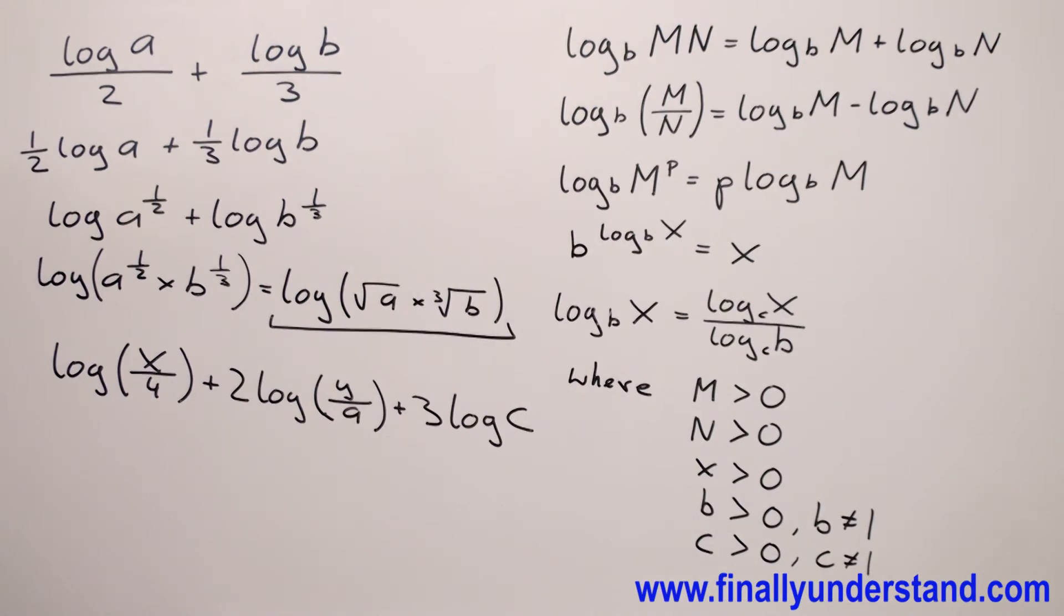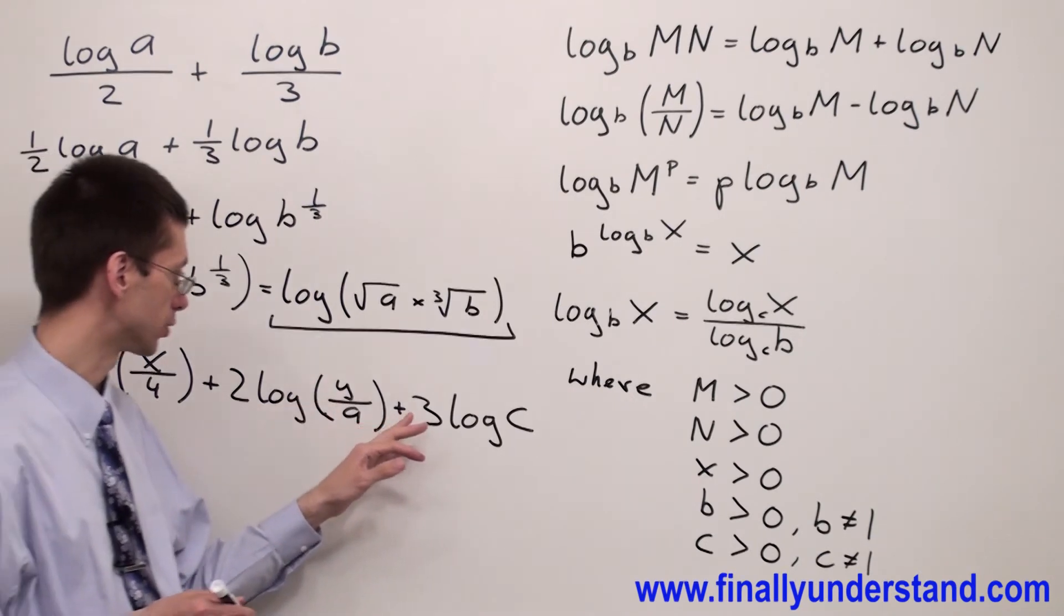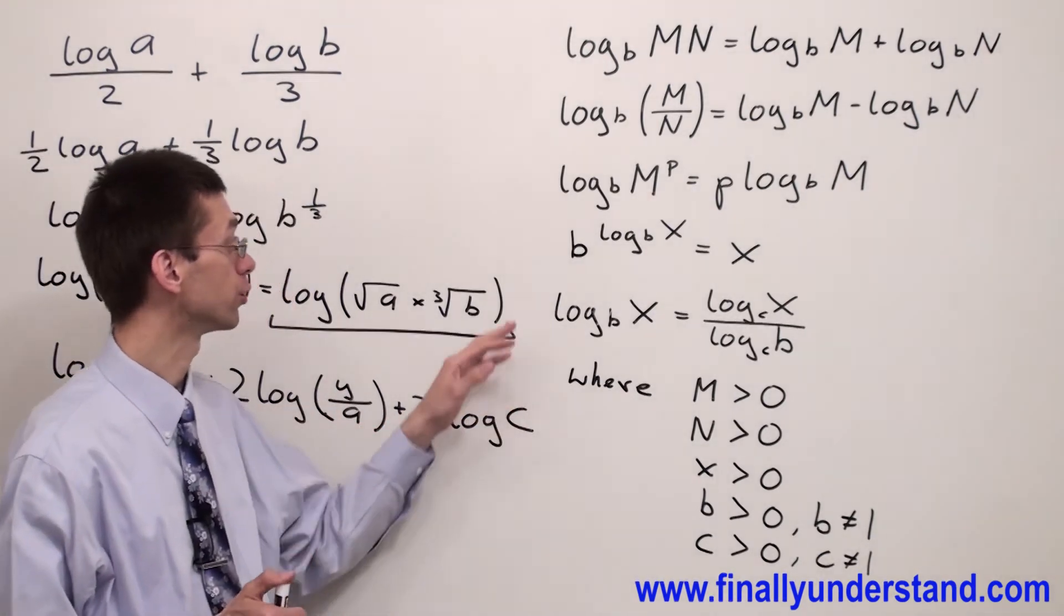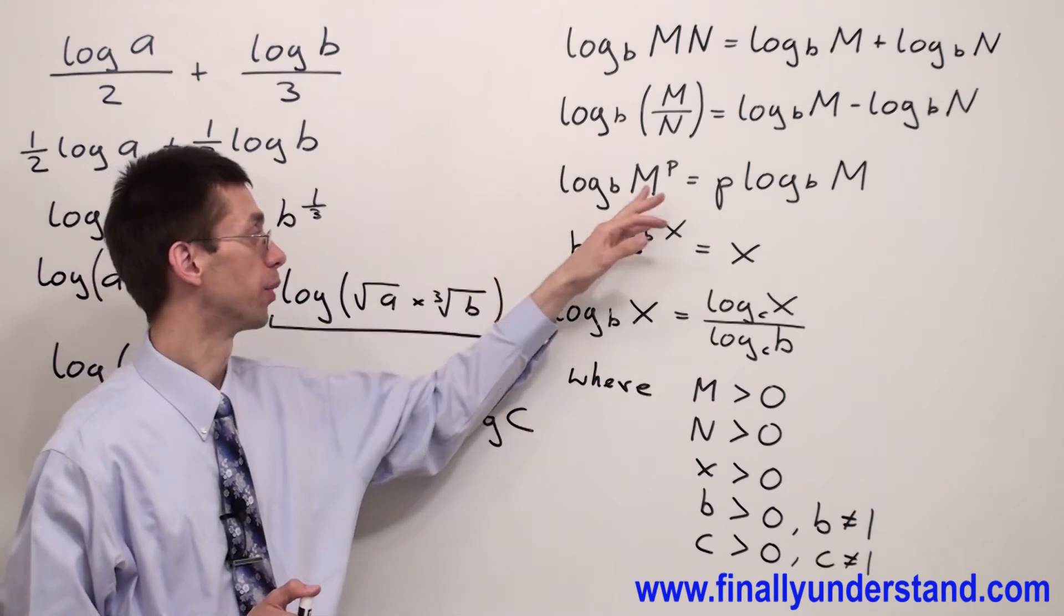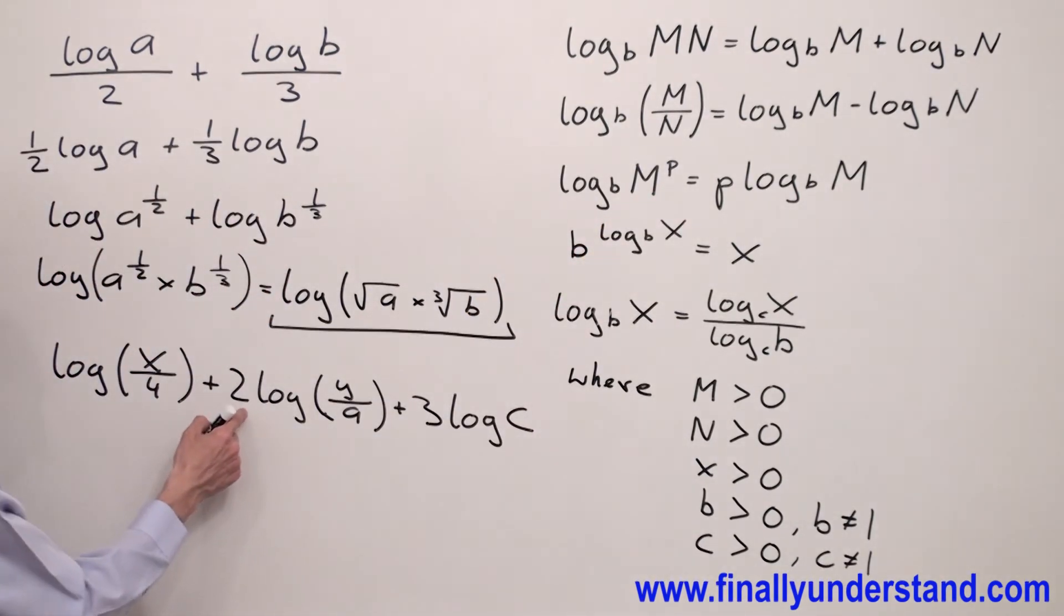Let's take a look at the second example. For 2 log y over a and 3 log c, I'm going to use the property of the power. I'm going to make sure that the coefficient next to the log is going to be equal 1.